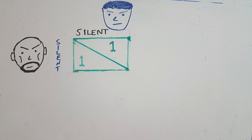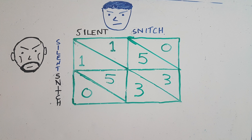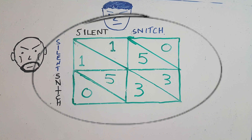If both of them stay silent, they both get one year in prison. If one stays silent and the other snitches, the silent one gets five years while the snitch goes free. If both of them decide to snitch, they both get three years in prison. We illustrate these choices and their consequences using the payoff square, which we see here.